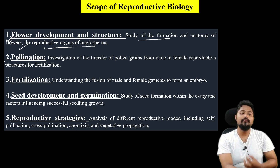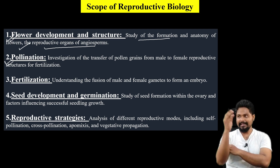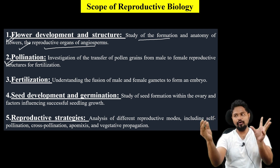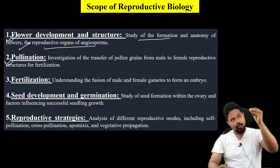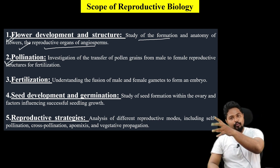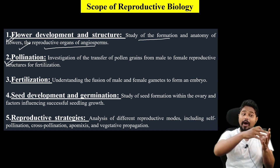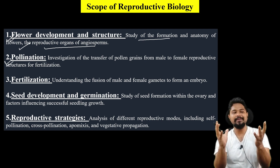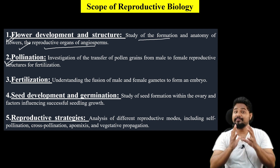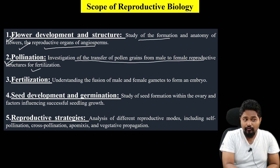I will help you with the pollination concept. What is pollination? Pollination is the transfer of pollen to the flower, leading to fertilization. This is the concept we have to study in reproductive biology — the investigation of the transfer of pollen grains from male to female reproductive structures for fertilization.